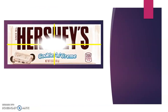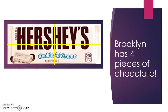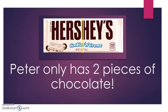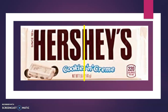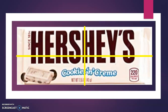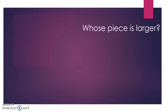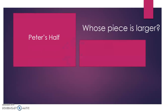If you said Brooklyn, you're right — Brooklyn has four pieces of chocolate. How many pieces of chocolate does Peter have? Pause and discuss, then press play. Peter only has two pieces of chocolate. Let's color in one piece of Peter's chocolate. Now let's color in one piece of Brooklyn's chocolate. Whose piece is larger — is it Peter's half or Brooklyn's fourth?